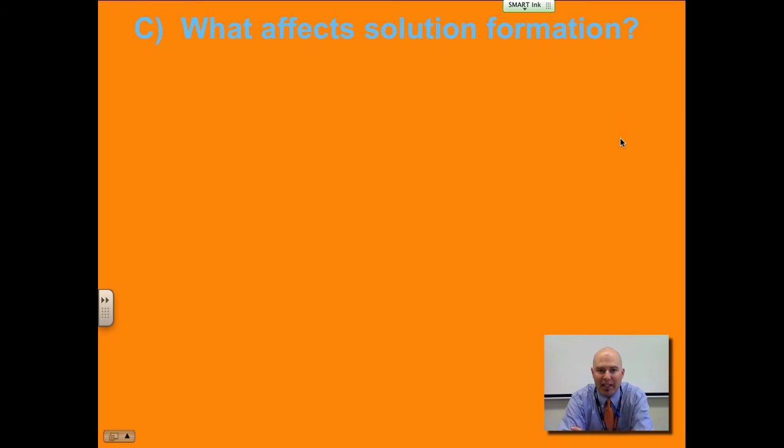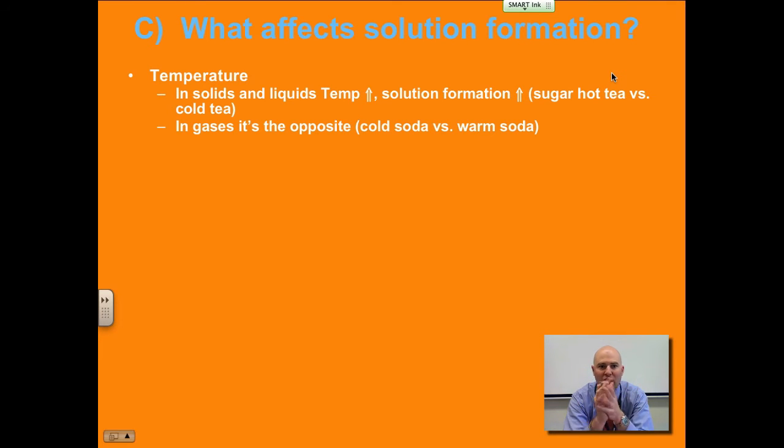The next slide talks about what might affect solution formation. First of all, temperature. In solids and liquids, if you increase the temperature, the solution formation will increase as well. Sugar, hot tea versus cold tea, or coffee for that matter. If you go to Dunkin Donuts and order your coffee with sugar in a hot coffee, they'll put some sugar, stir it all up, drink it. You probably don't have any sugar on the bottom of the cup when you're done. In cold coffee, or iced coffee, I notice whenever I get an iced coffee—I get the same thing, a regular cream and a sugar—there's a ton of sugar on the bottom of it while I'm drinking. It's all crystalline, it's gritty. I don't think the people at Dunkin Donuts are putting tons and tons of sugar. It's just that the sugar is not dissolving because it's colder.